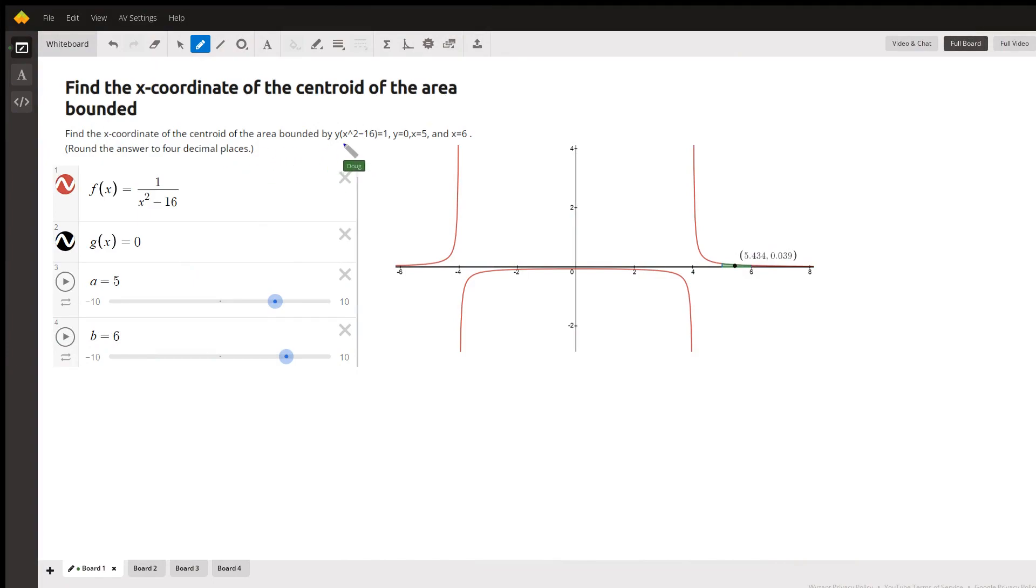Okay, here's the big picture. We have this function which we can rewrite this way. That's the graph, this red graph here. Sometimes we're finding the centroid of an area bounded by another function g of x which is below f of x. Here g of x equals zero.